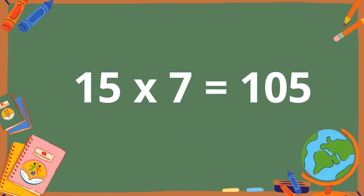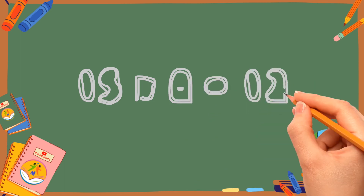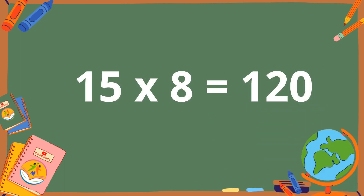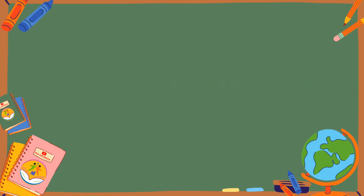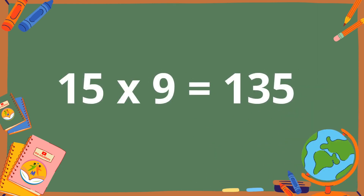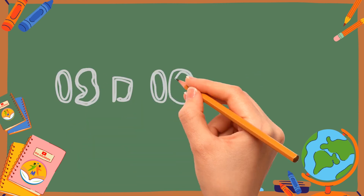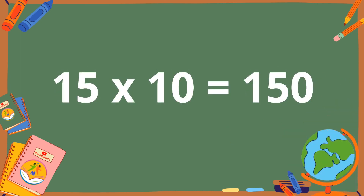15 sevens are 105. 15 eights are 120. 15 nines are 135. 15 tens are 150.